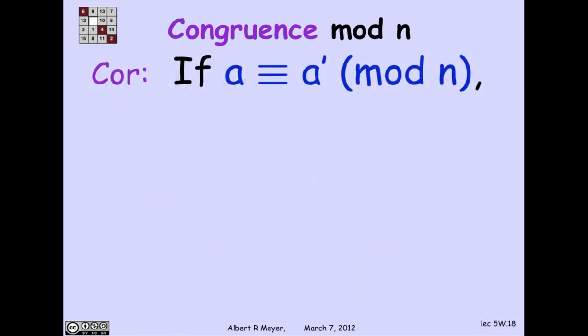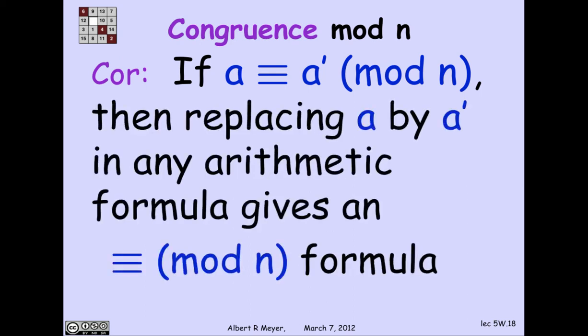A corollary of this is that if I have two numbers that are congruent modulo n, then if I have any kind of arithmetic formula involving plus and times and minus, and what I want to know is what it's equivalent to modulo n,